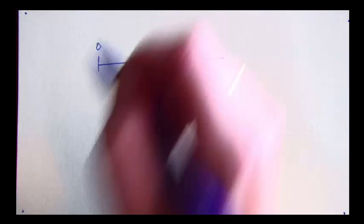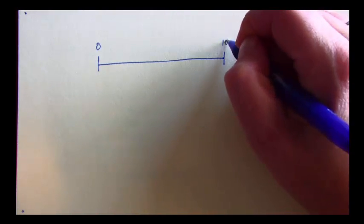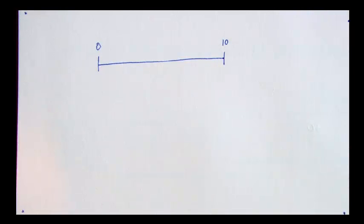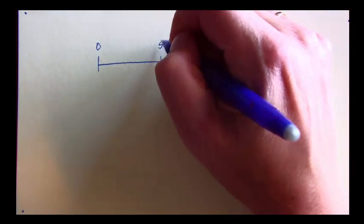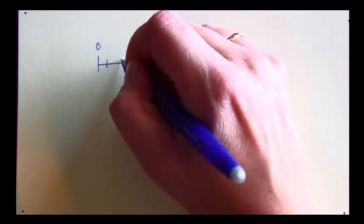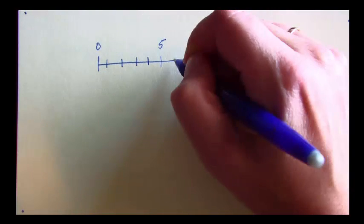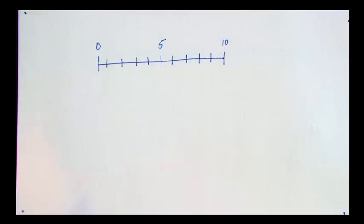I'm going to start this number line at 0, and I'm going to make it go to 10. And I would evenly distribute all the other numbers between 0 and 10. 5 would be in the middle, and I would have 1, 2, 3, 4, 5, 6, 7, 8, 9, 10. Everything evenly distributed, same distance approximately between each mark.